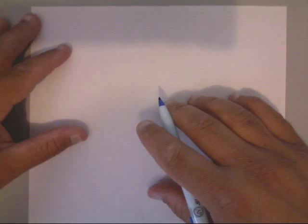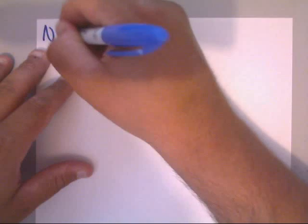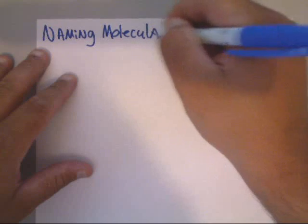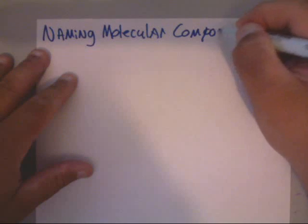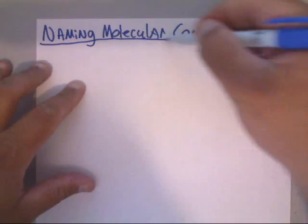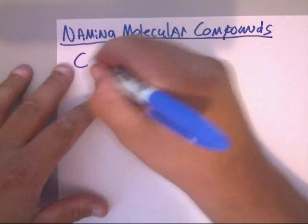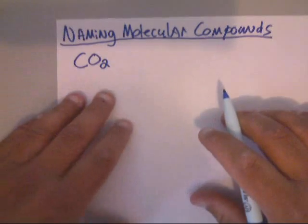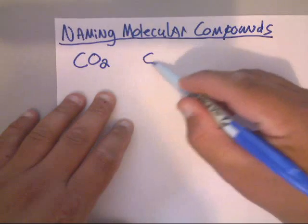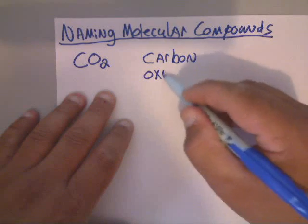Alright, some of you want to know how to name molecular compounds and I'll show you how to do that. Naming molecular compounds is kind of easy — you just don't deal with any metals. For example, CO2 — I think everybody knows what that is. That's a good one to start out with. List your elements: you have carbon, which is the first one, and the next one is oxygen.